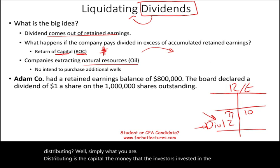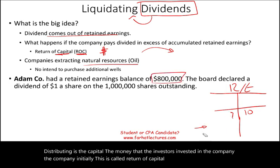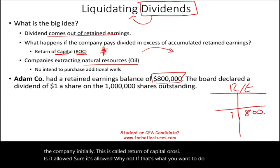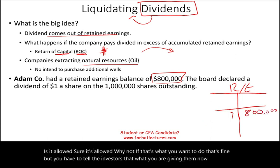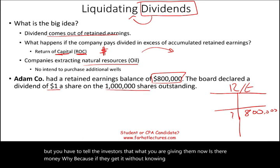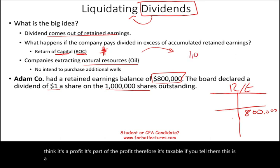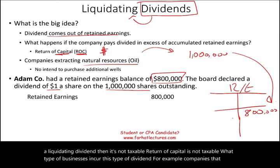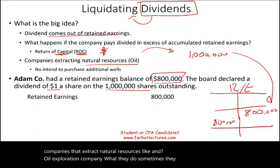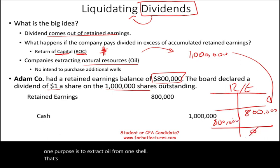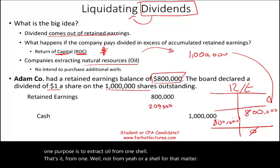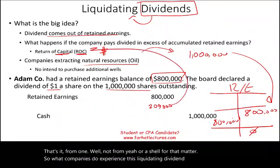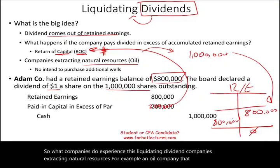Let's assume Adam Company had a retained earnings balance of $800,000. The board declared a dividend of $1 on the 1 million shares they have, paying each shareholder $1 — so they're paying $1 million total. They only have $800,000 in retained earnings, so you reduce retained earnings by $800,000, bringing it down to zero, and pay out cash of $1 million. We are missing a debit of $200,000. This $200,000 is return of capital, so we debit paid-in capital in excess of par.